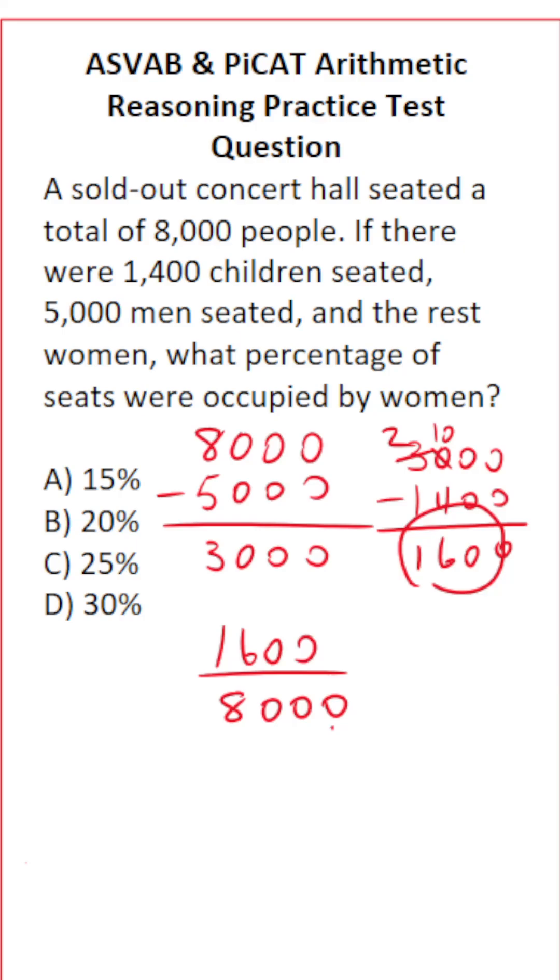All we have to do is convert this fraction to a decimal and then a percent. The easiest way to do that is to start by crossing out these corresponding zeros. This reduces to 16 over 80, and you should recognize that 16 and 80 have a common factor of 8.